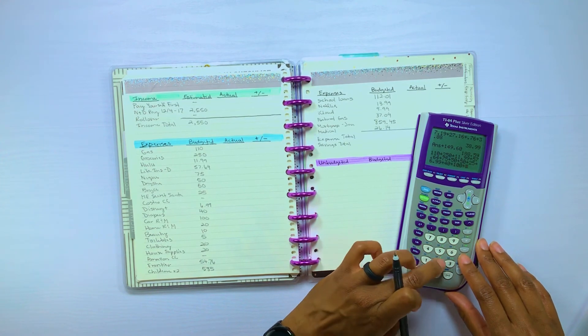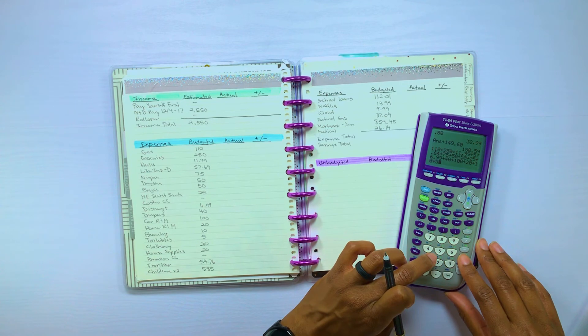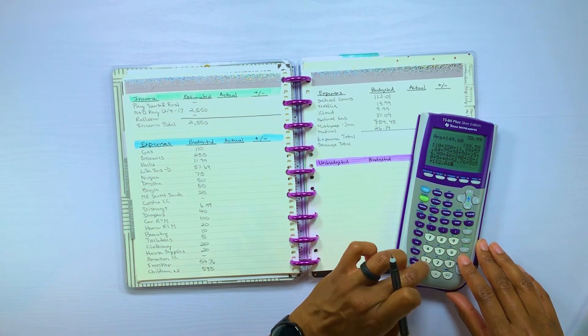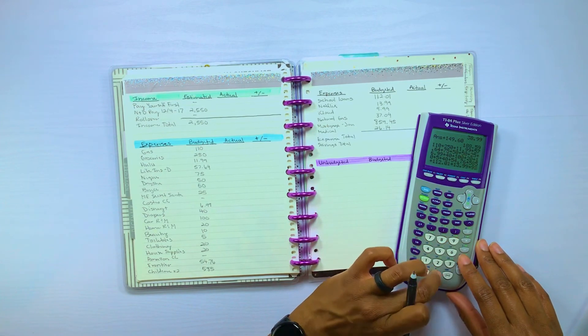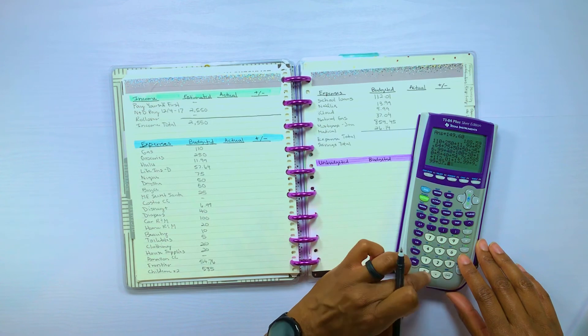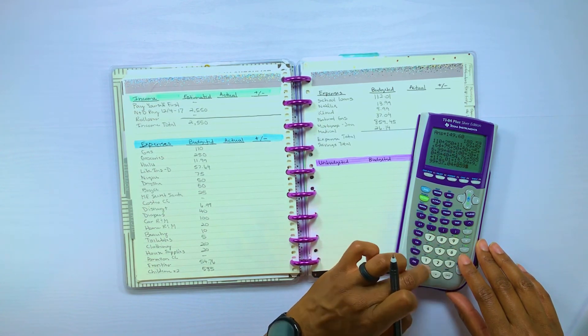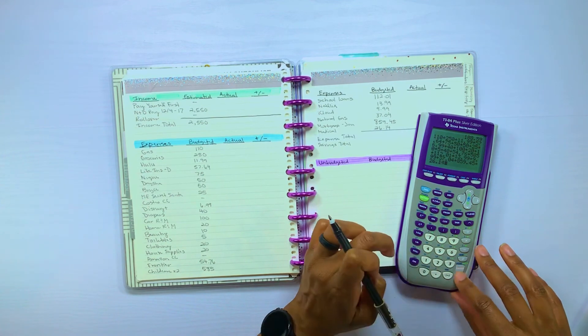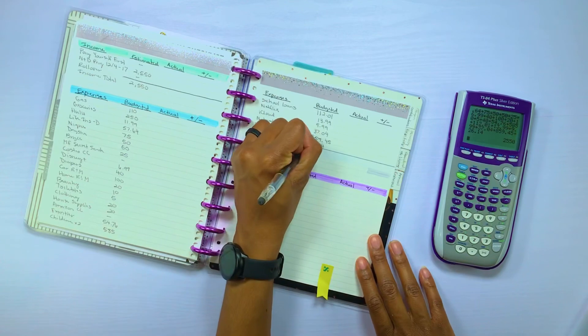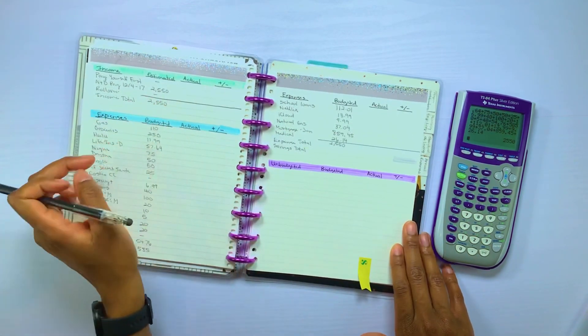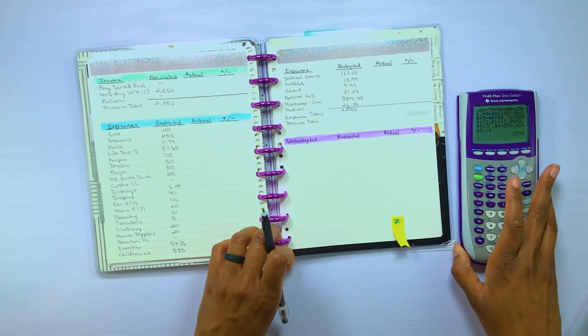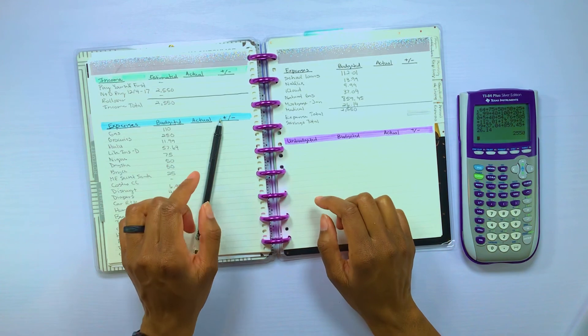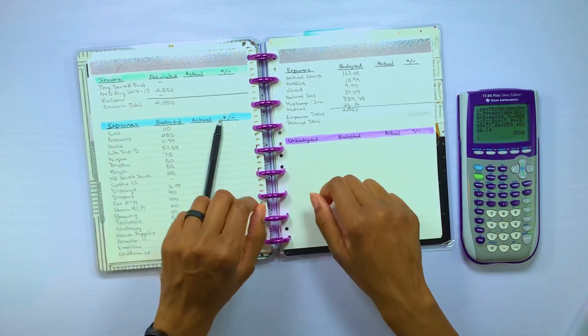So let me go ahead and add up all of these expenses. All right so that is $2,550 so that does match the income that we're expecting which means we have a zero based budget. So I think my son is waking up from his nap so I want to end the video here. Thank you so much for watching. If you enjoyed the video please hit that thumbs up button and if you want to help me get to 1,000 subscribers then go ahead and hit that subscribe button and I'll catch you guys in the next one. Bye.